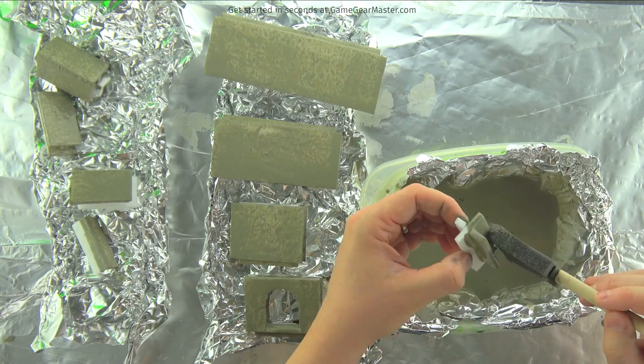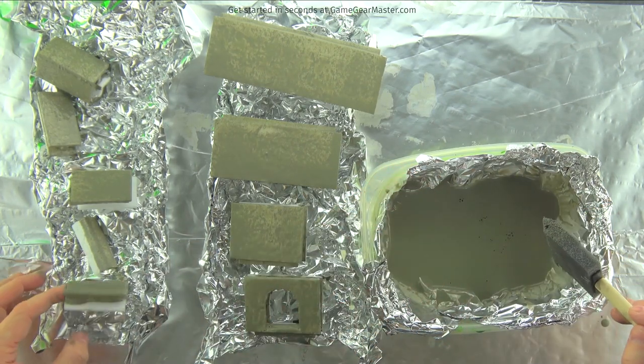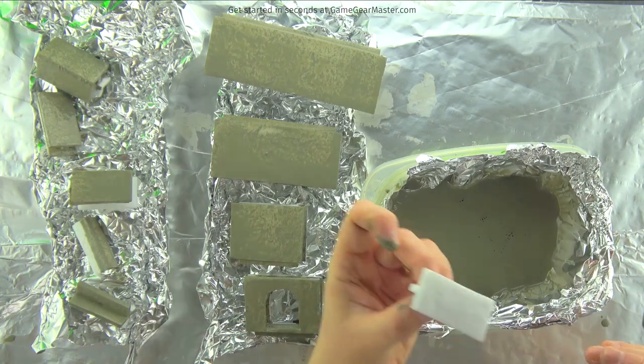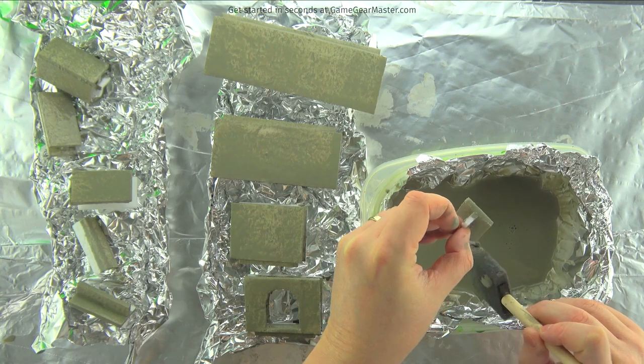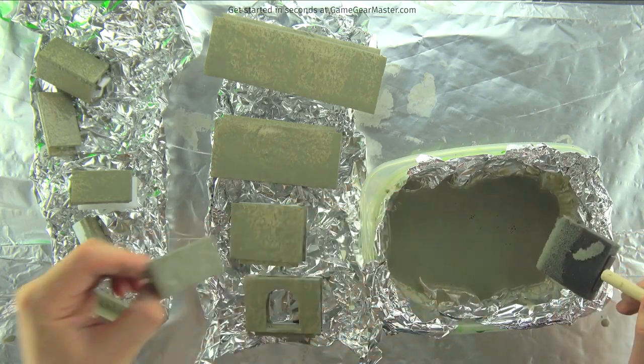So after you've let these dry for about 30 minutes they won't be completely dry but they'll be dry enough for you to handle to dip the other areas of the pieces that you didn't get to put paint down the first time.